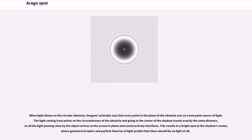When light shines on the circular obstacle, Huygens' principle says that every point in the plane of the obstacle acts as a new point source of light. The light coming from points on the circumference of the obstacle and going to the center of the shadow travels exactly the same distance, so all the light passing close by the object arrives at the screen in phase and constructively interferes. This results in a bright spot at the shadow's center, where geometrical optics and particle theories of light predict that there should be no light at all.